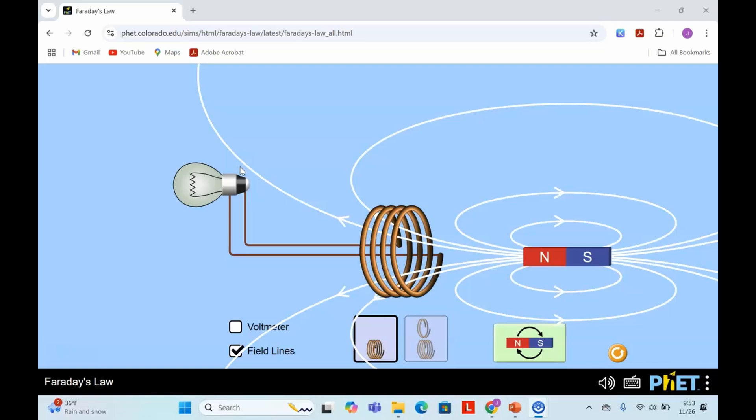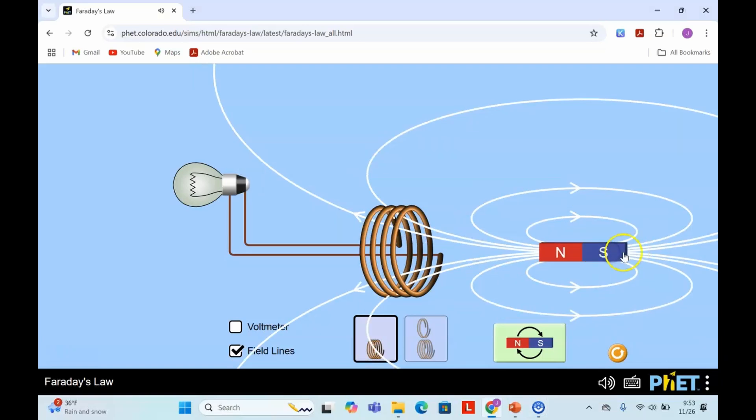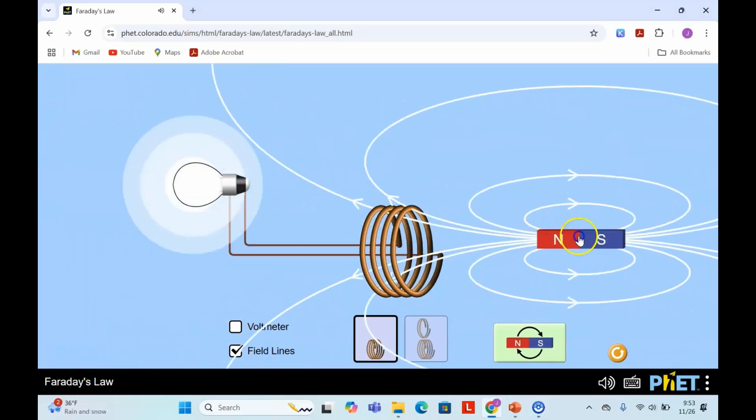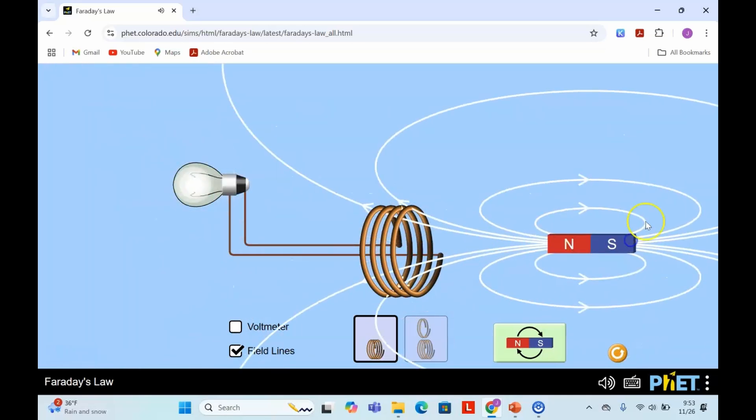According to Faraday's Law, this change in flux generates an electric field which drives a current in the circuit, ultimately lighting up the bulb. Anytime the flux through the circuit changes, the light bulb lights up. That's Faraday's Law.